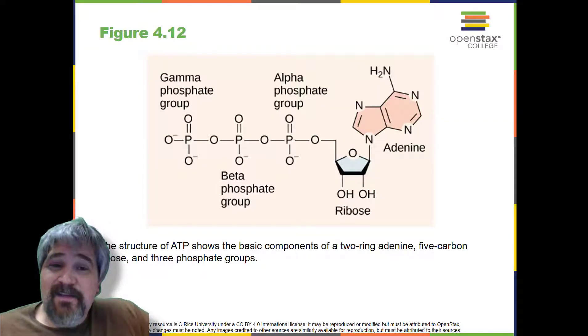ATP is a small, relatively simple molecule, but within its bonds contains the potential for a quick burst of energy that can be harnessed to perform cellular work. This molecule can be thought of as the primary energy currency of cells in the same way that money is the currency that people exchange for things they need. ATP is used to power the majority of energy-requiring cellular reactions.